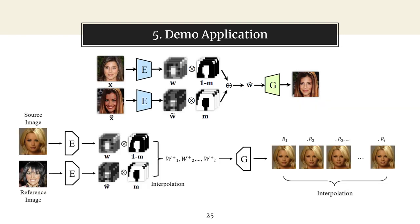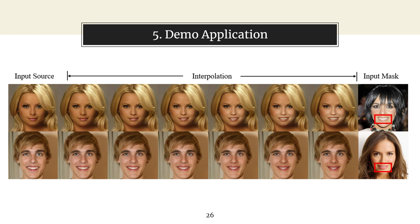Finally, slide 25 provides a comparison of the original local editing process and the augmented local editing process for interpolation mode. An additional step is added where the resultant latent space is determined by a weighted combination of both the source and reference latent spaces, controlled by interpolation steps. This produces a series of latent spaces which, when fed to the generator, yield a set of images with interpolation. Slide 26 shows a result of local editing with interpolation.